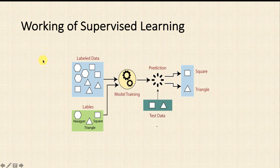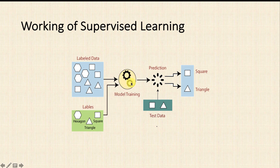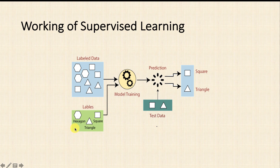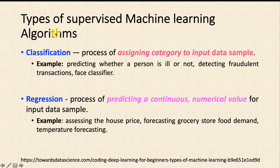Here is another diagram: we have different types of patterns with defined labels — hexagon, triangle, square. We feed this into the model for training. Then we provide test data and the model accurately predicts — for example, this is a square, this is a triangle. This is the key point: in supervised learning you have labeled data.